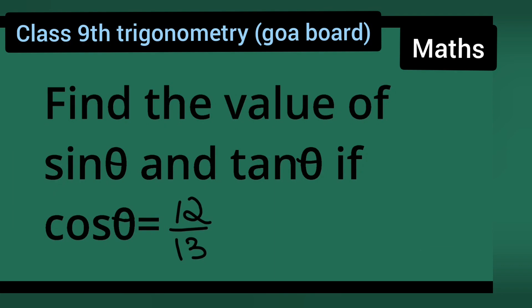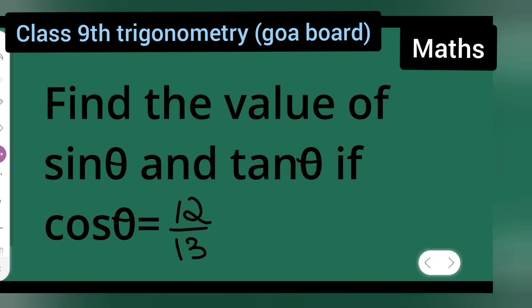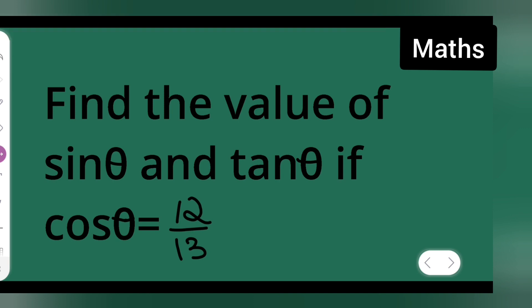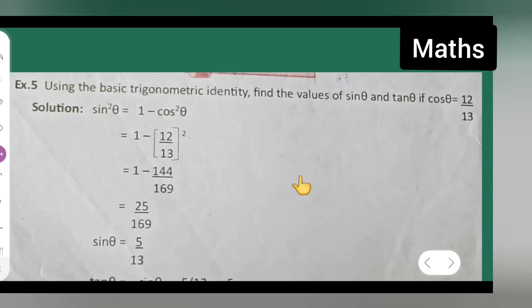This is for class 9th trigonometry. Today's question is: find the value of sin theta and tan theta if cos theta is equal to 12 upon 13. This is one of the examples from the trigonometry chapter. Let us see how to do it.